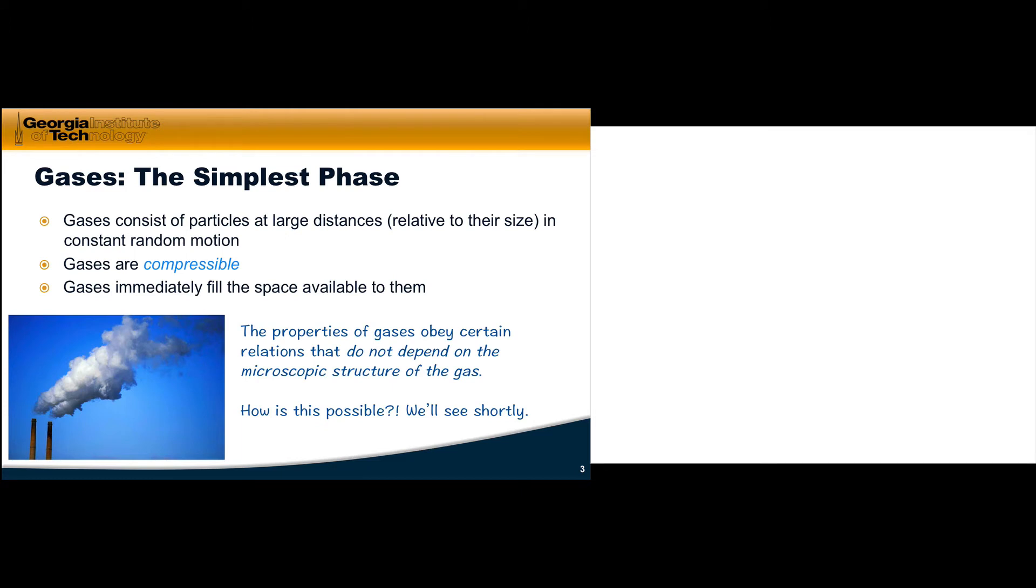Gases are the simplest phase of matter. They consist of particles at large distances relative to the size of the particles in constant random motion. So a gas in a box is just a bunch of tiny, approximately spherical particles bouncing around randomly. It's our typical image of a gas.